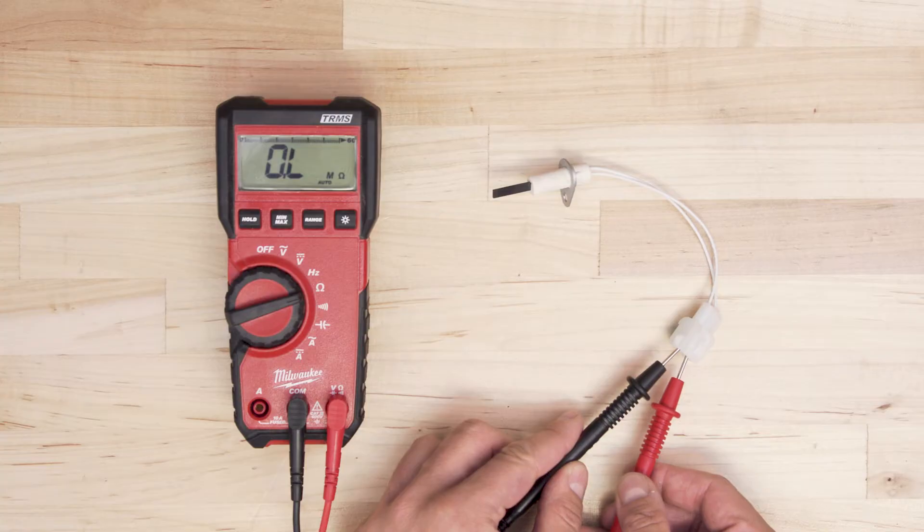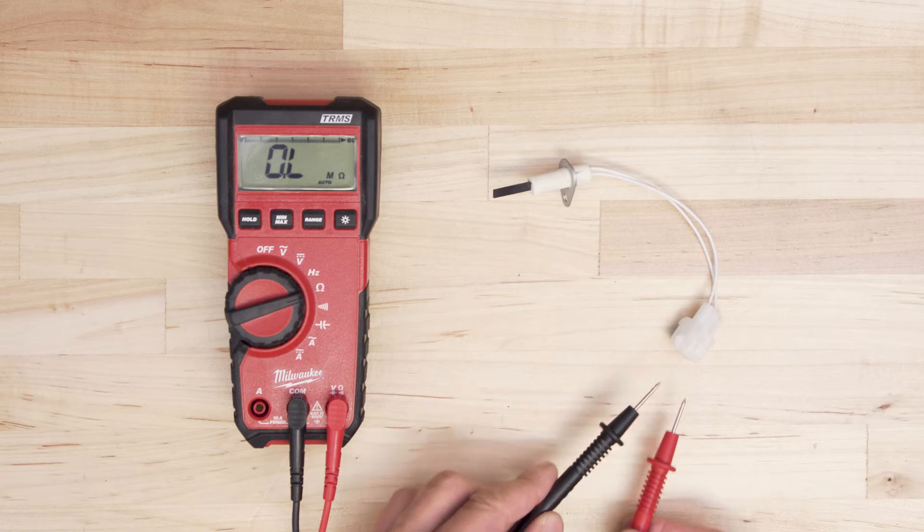If there is no reading on the multimeter, or just a slight change, then there is no continuity and you will have to replace the igniter.